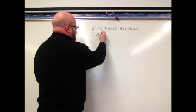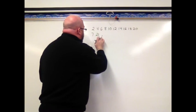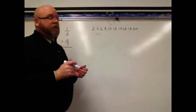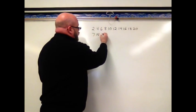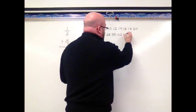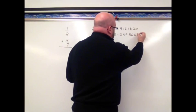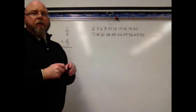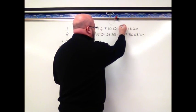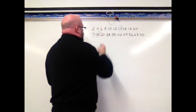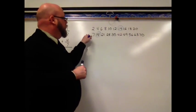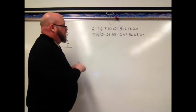Then I'm going to count by 7s. 7, 14, 21, 28, 35, 42, 49, 56, 63, and 70. Then I'm going to look for what they have in common. I can see here that the least common multiple of 7 and 2 is 14. The least common multiple of 7 and 2 is 14.